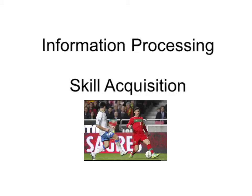Welcome to information processing. Today we're going to look at Schmidt's stage model and explain how once we receive a stimulus, we make a decision based on previous experience and then produce a response to that stimulus.